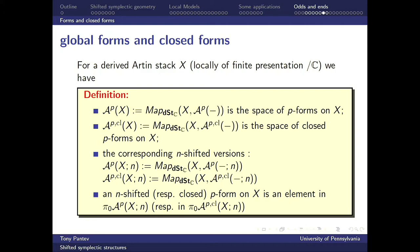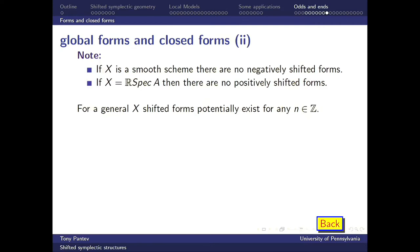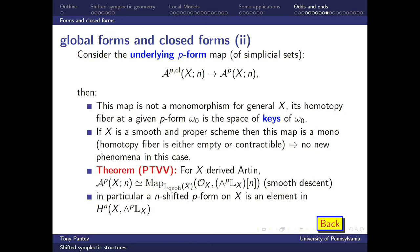You have shifted versions of n-shifted p-forms and n-shifted closed p-forms, and actual forms are elements in the homotopy groups of these spaces. One remark: if X is a smooth scheme then there are no forms of negative shifts — they're all contractible. If X is a derived affine scheme there are no positively shifted forms. But if X is general, there are shifted forms for essentially any possible shift.